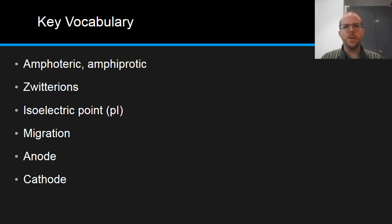Some of the key vocabulary that we're going to be looking at is the idea of amphoteric and amphiprotic nature of amino acids, looking at zwitterions, the isoelectric point, migration, anode and cathode.